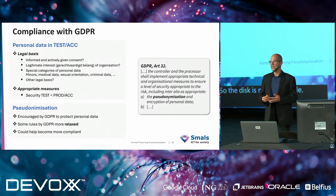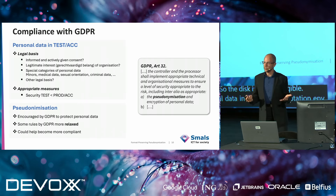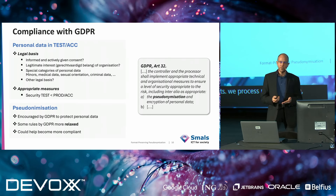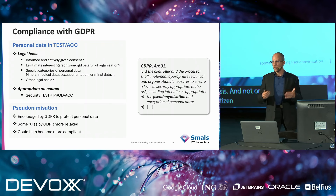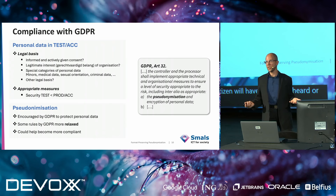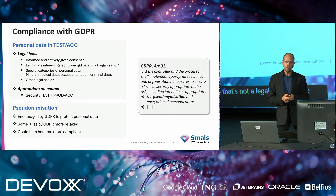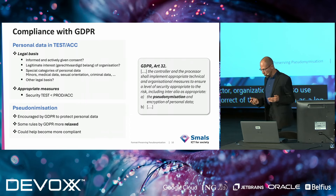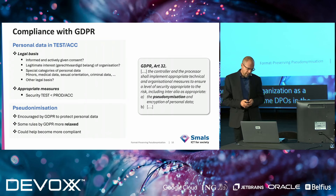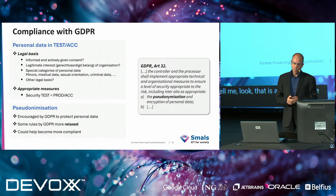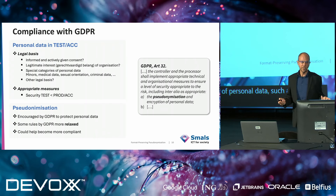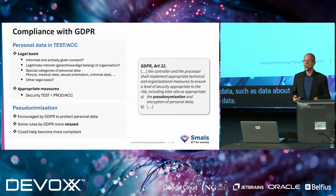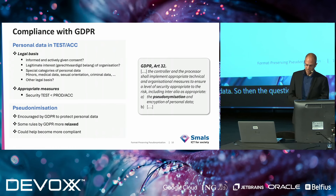Also, if we use personal data in test and acceptation environments, we process personal data, which means the GDPR applies. The GDPR applies, which means we need a legal basis. Only in very exceptional cases will the citizen have given explicit consent — so that's not a legal basis we can use. In the public sector, organizations can also use the legitimate interest of the organization as a legal basis. But DPOs in the public sector tell me that is a questionable legal ground, especially for special categories such as data about minors, medical data, data about sexual orientation, and criminal data.